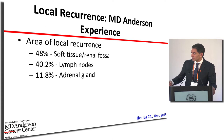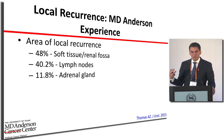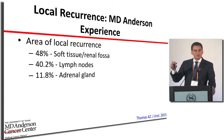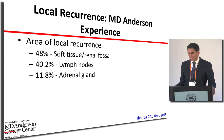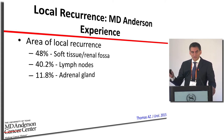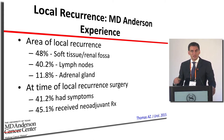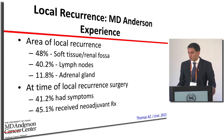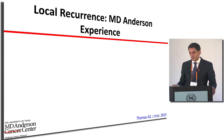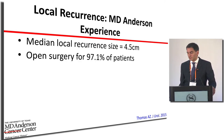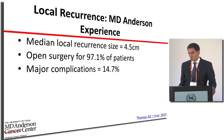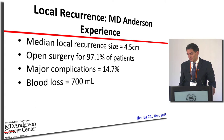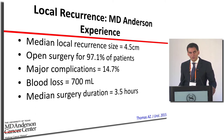Areas of recurrence include the renal fossa — where the kidney used to be — nearby lymph nodes, or the adrenal gland if left behind. About half the patients had symptoms at detection rather than being found on routine imaging. Recurrences averaged close to two inches in size. We performed open surgery in the vast majority, with about 15% complication rate, surgery averaging about three and a half hours, and a hospital stay of about a week.